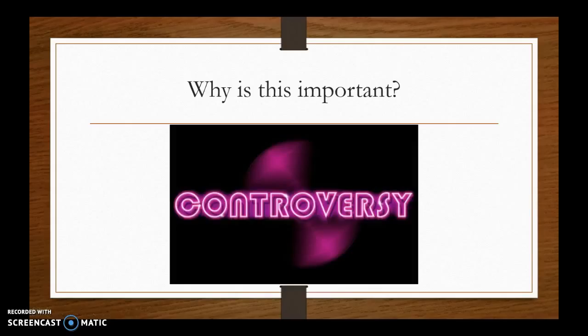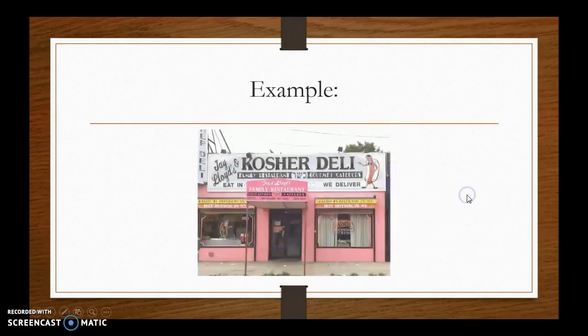So why is any of this important? Because you're dealing with controversy. Generally, when dealing with controversial issues — which is something you'll do in English 112 — you need to be able to look at the different sides of an argument, critically think, and analyze what is being said and what's not being said.